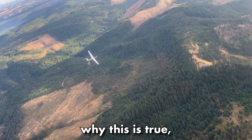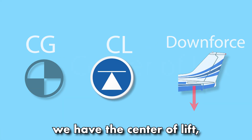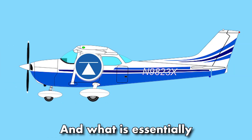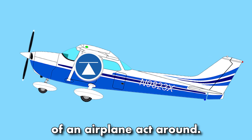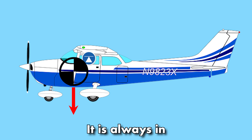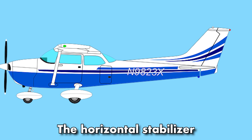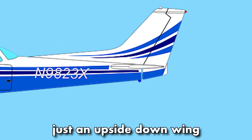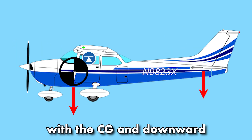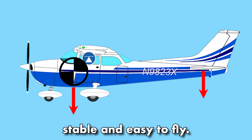To understand why this is true, we need to look first at all of the factors involved. First of all, we have the center of lift, also called the center of pressure. This is the average point of lift on the wing and what is essentially a fulcrum that all of the forces of an airplane act around. Second, we have the CG or center of gravity. It is always in front of the center of pressure and counteracts the downforce of the horizontal stabilizer. The horizontal stabilizer is essentially just an upside down wing that creates downward lift. These three factors act together with the CG and downward lift balancing on the center of lift to make the airplane stable and easy to fly.